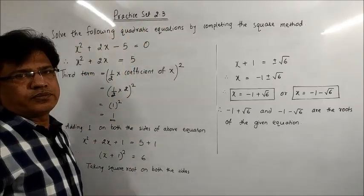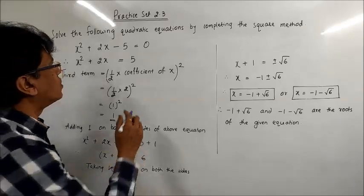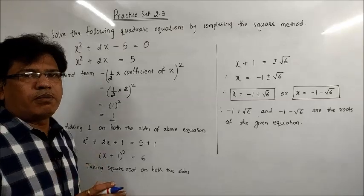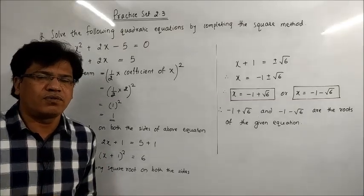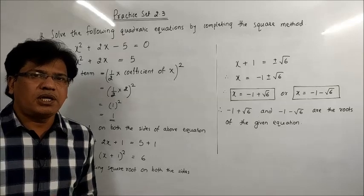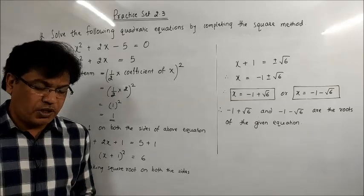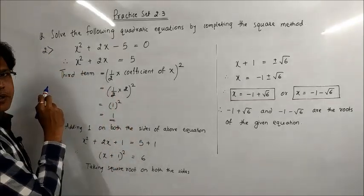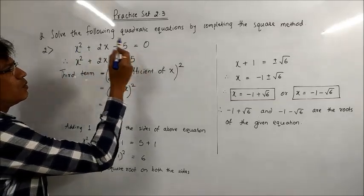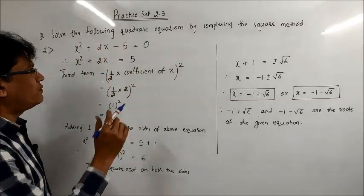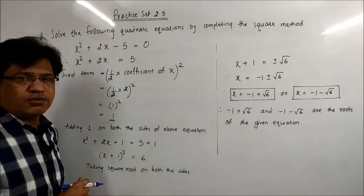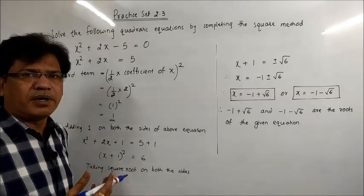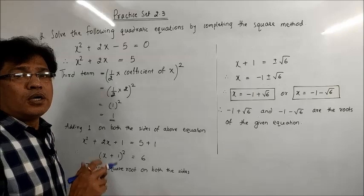There is only one question: solve the following quadratic equations by completing the square method. There are six problems; I'll be solving three problems of different types for you, and the remaining three you can do on your own. So let us see what this completing squares method is. Problem number 2: x² + 2x - 5 = 0. First of all, you have studied the factorization method, so you might be asking why we need so many different methods.